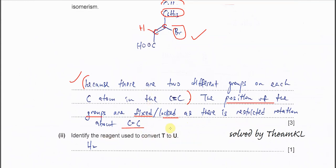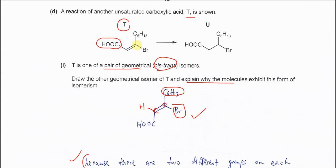Identify the reagent used to convert T to U. T to U - the double bond gets saturated. We know that it must use H2.